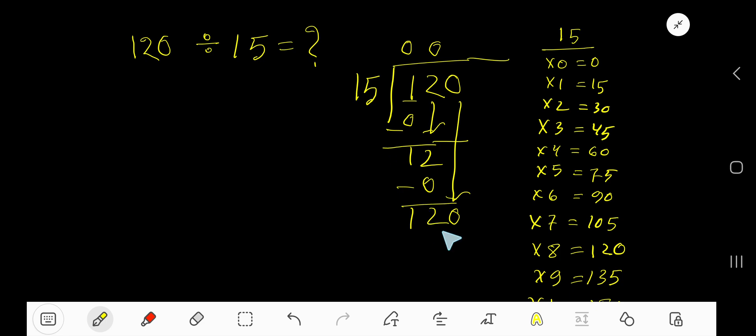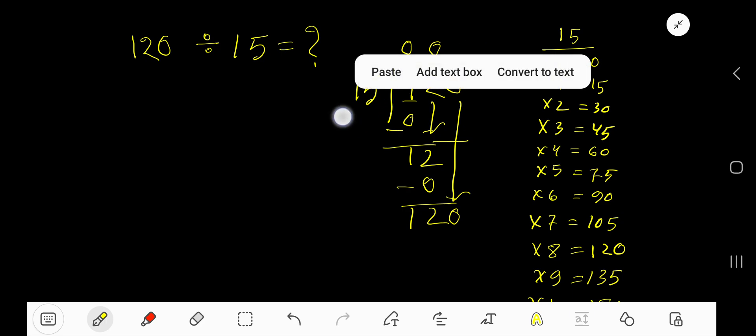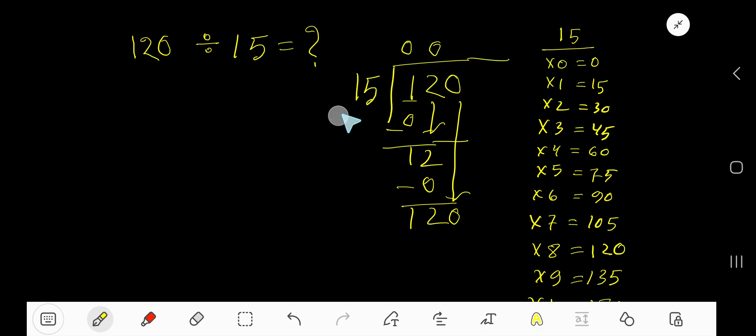15 goes into 120 how many times? Actually you need to guess a number here and then multiply with this 15 with that number that you are guessing. And the multiplication of your guessing number and your divisor should be less than 120.